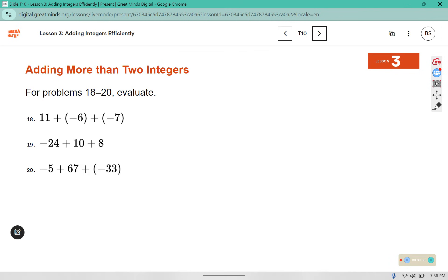For problems 18 through 20, evaluate. I'm going to combine the ones that have the same sign first. So I have negative 6 and negative 7. That would give you negative 13, because 6 plus 7 is 13. So we have 11 plus negative 13. 13 is longer than 11, or has a higher absolute value, so our final answer is going to be negative. And the difference between 11 and 13 is 2.